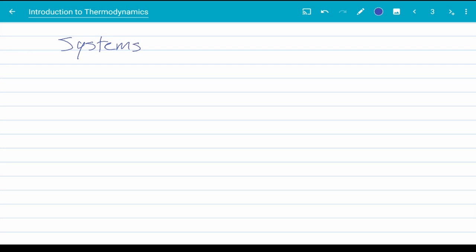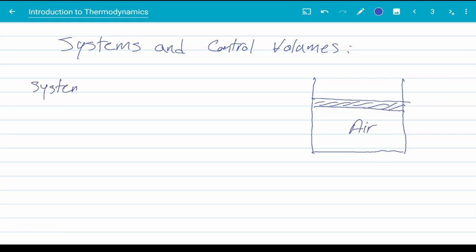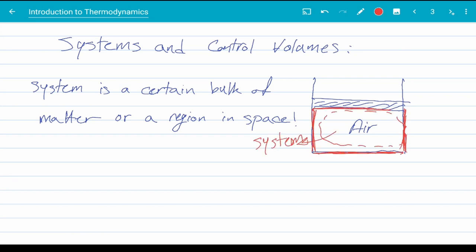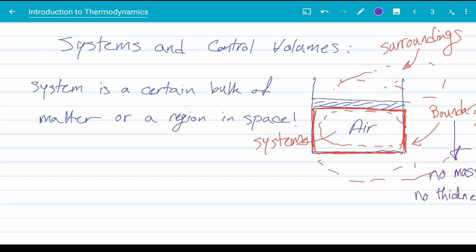So let's begin with the definition of systems and control volumes. Consider a piston and cylinder full of air. This is a typical thermodynamic system. By definition, system is a bulk of matter or the defined region in space. So for example here, the air inside is our system. These red lines separating our system from the rest of the world are called boundaries. Anything outside the boundaries of our system is called the surroundings. A point you need to remember is that boundaries, for the sake of our thermodynamic analysis, have no mass and no thickness. This means they can't store energy.